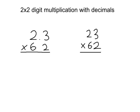Doing this the mental and quicker way, we first do 3 times 2, working from right to left. 3 times 2 is 6. Then we go across to 2 times 2, which is 4. So our first answer is 46.